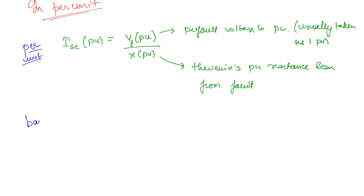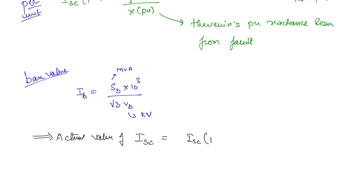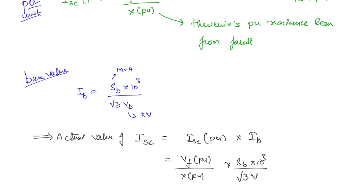Now consider the base value. The base current IB equals SB times 10 cubed divided by root 3 times VB, where SB is in MVA and VB is in kilovolts, so the factor 10 cubed gives the current in amperes. The actual short circuit current ISC is then the per unit value times the base value: (Vf(pu) / X(pu)) times (SB × 10³ / (√3 × VB)).